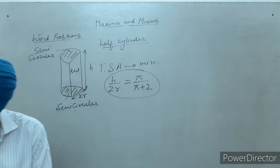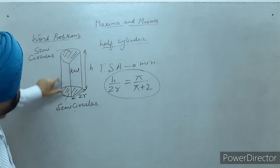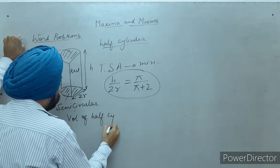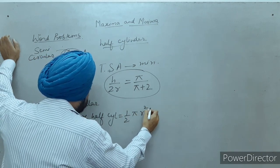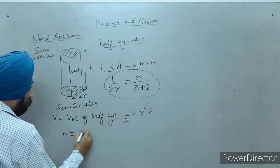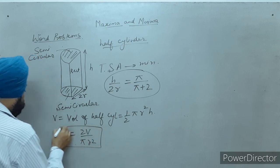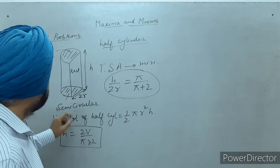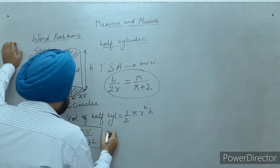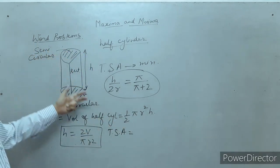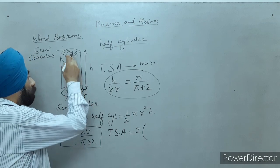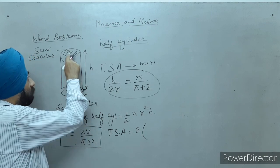The volume of the half cylinder is (1/2)·π·R²·H, where radius is R and height is H. This equals V, so from here H equals 2V upon (π·R²). Now I need to find the total surface area. There are two semi-circular ends — their combined area is 2 times (1/2)·π·R² equals π·R². The rectangular base has area H times 2R. The curved surface area of the half cylinder is half of the full cylinder's curved surface area: half of 2πRH equals πRH.